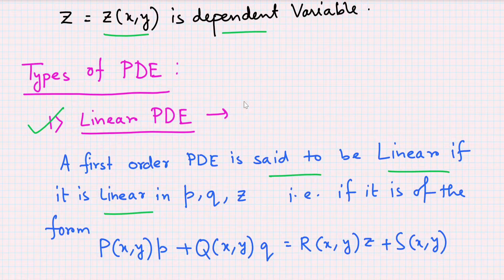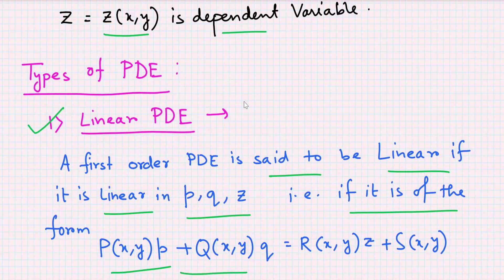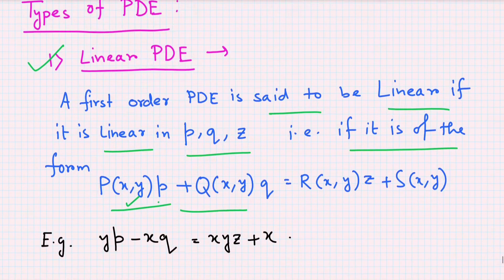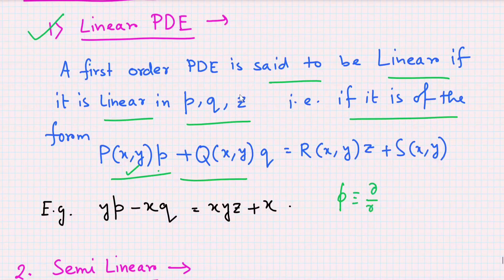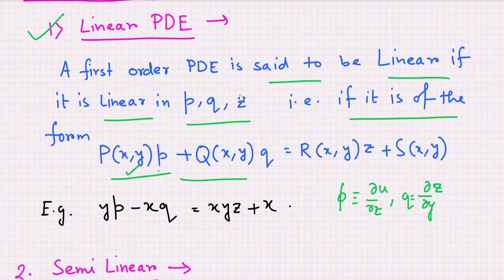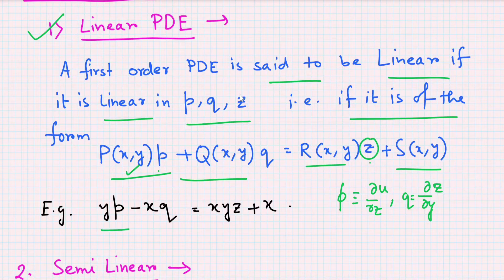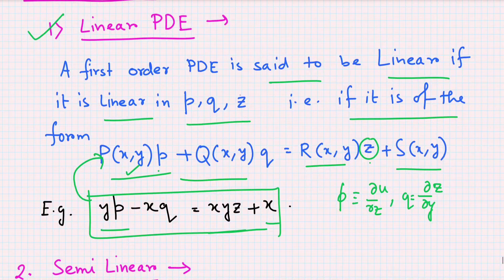A first-order PDE is said to be linear if it is linear in p, q, and z, where p stands for ∂z/∂x and q stands for ∂z/∂y. It is of the form: P(x,y)·p + Q(x,y)·q = R(x,y)·z + S(x,y), where the coefficients are functions of x and y. For example: y·p − x·q = xyz + x.